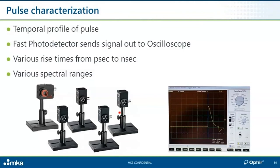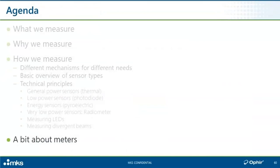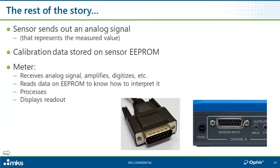Just a couple of words about meters before we conclude. Our standard sensors have their calibration data and other data stored on an EEPROM inside the connector at the end of the sensor cable — we call that the smart connector. Our instruments have a mating D15 connector, and as soon as a meter meets a sensor, it automatically reads all of that data and knows how to work with that sensor — what the calibration factors are, what menus to prompt the user with. The meter receives an analog output from the raw detector element, reads the data, and displays the readout on a handheld display or screen, with some instruments offering direct-to-PC interfaces.